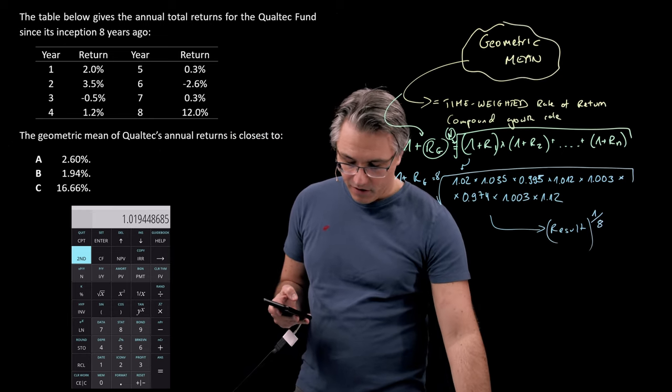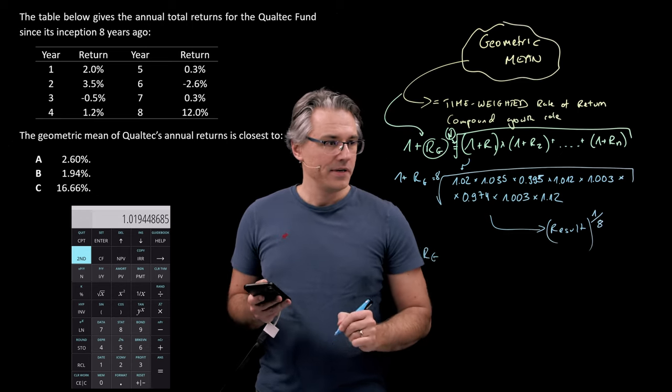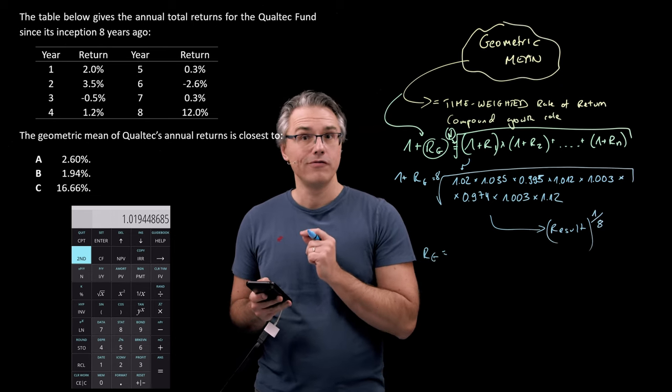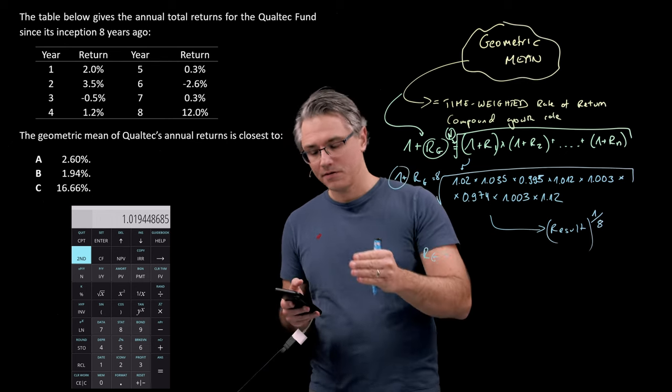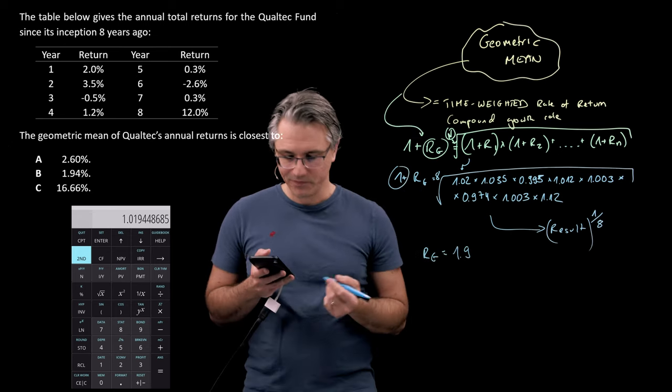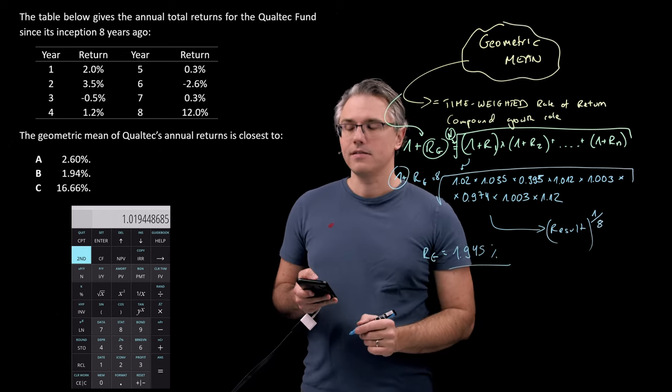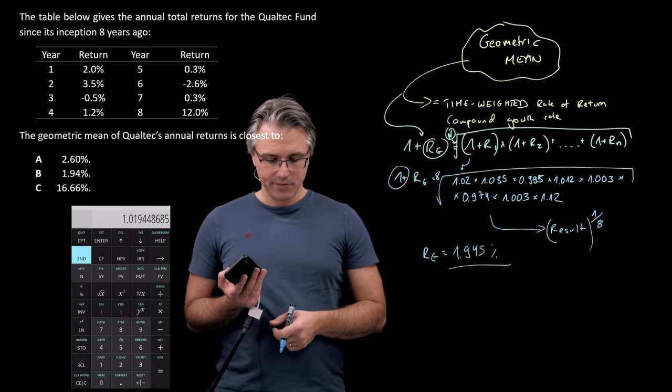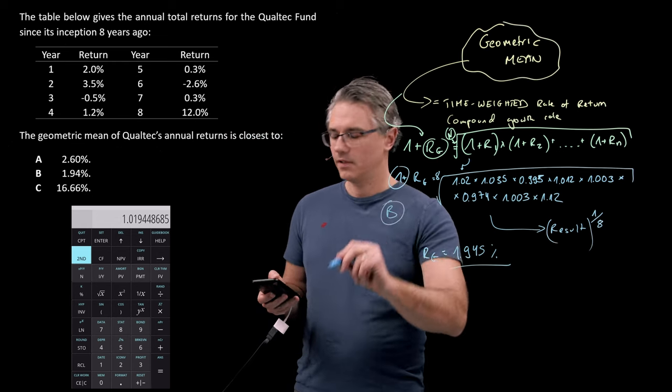Now, in order to actually get the RG, which is the geometric mean, I'm going to take this 1.01944 and deduct the 1, because whatever we computed here is 1 plus the rate. So ultimately, this ends up being 1.945 percent more or less. And that is the geometric mean in this question, which absolutely corresponds with what we've got provided as answer B.